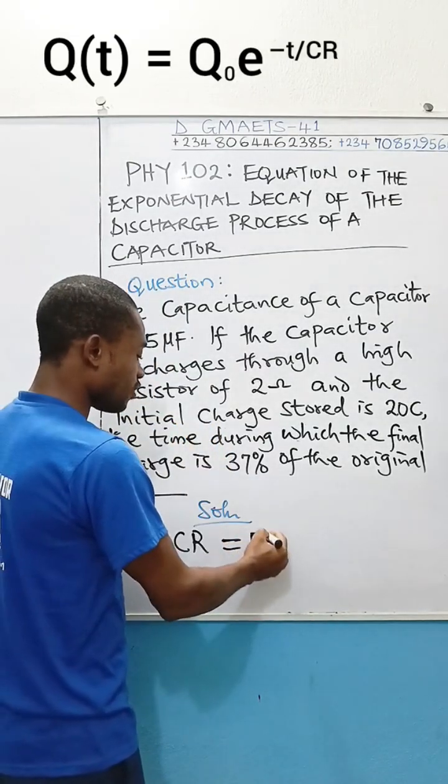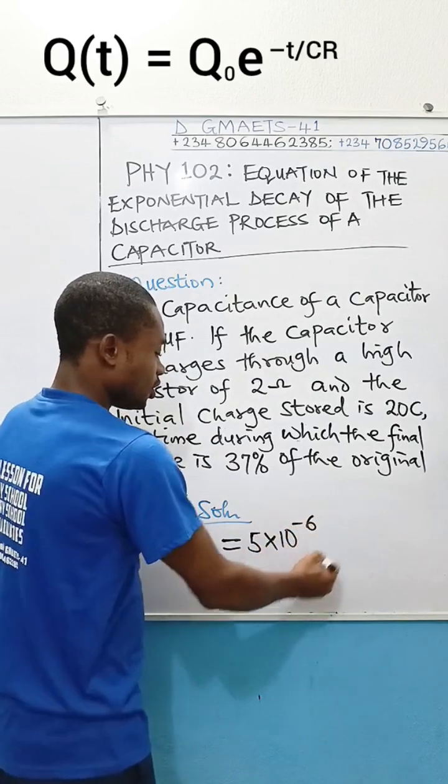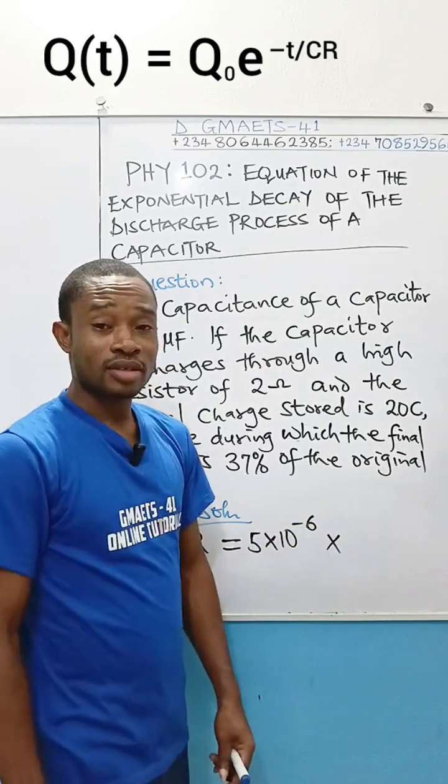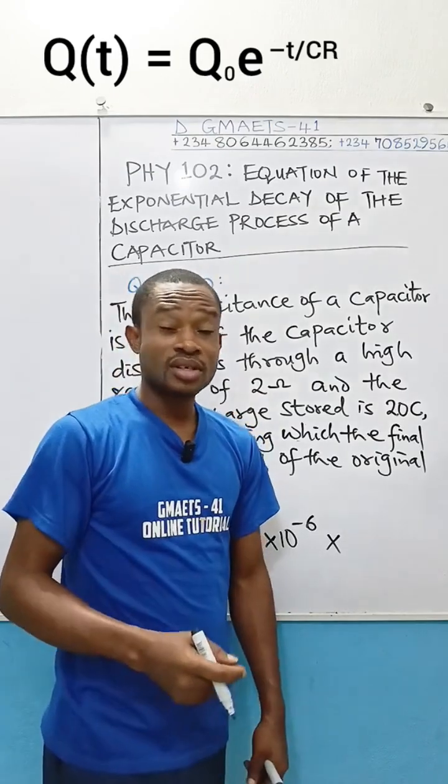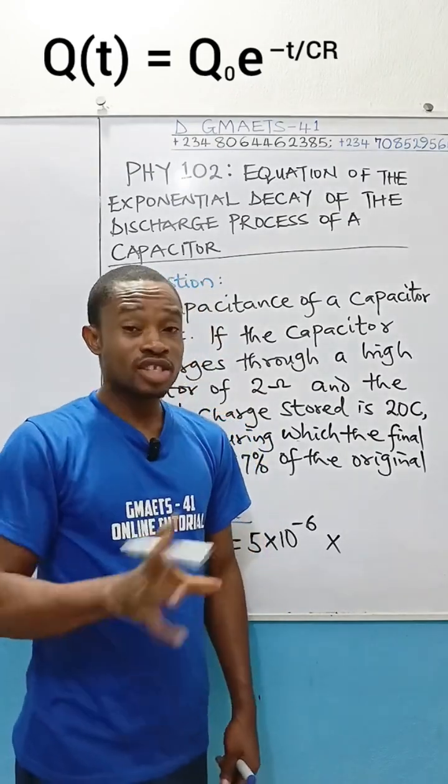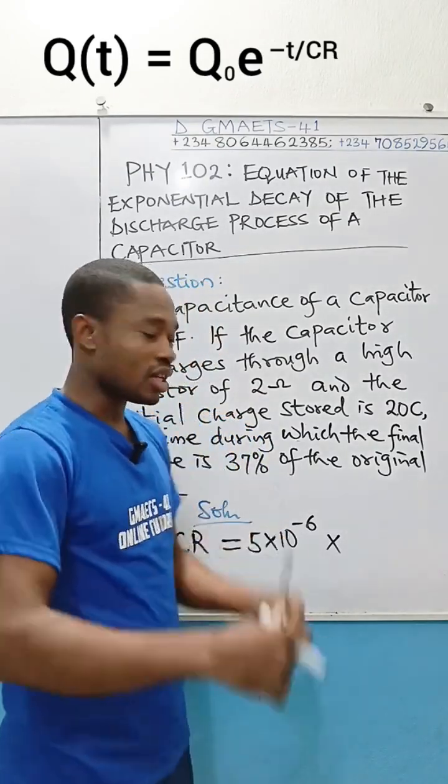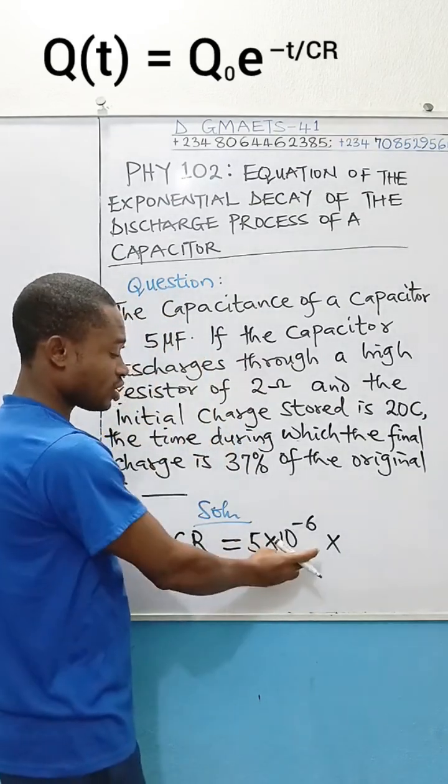That's 5 microfarad. We have to convert it to SI unit. So, that's 5 times 10 to the power of minus 6 since we are multiplying by the resistance. And of course, the resistance is not in micro ohms. It's not. It's just in ohms. So, we serve in SI unit. Convert this to SI unit in farad.